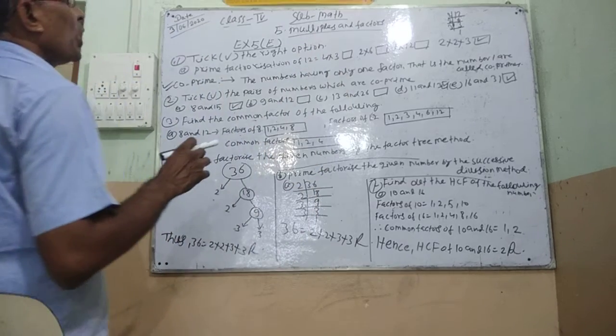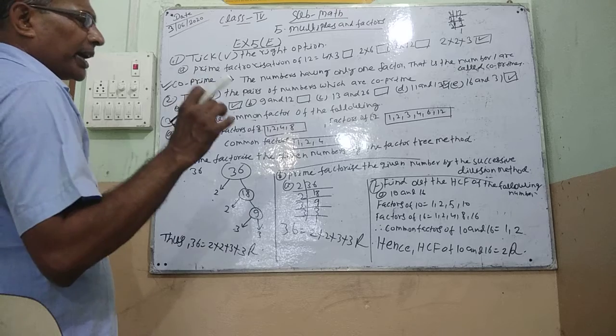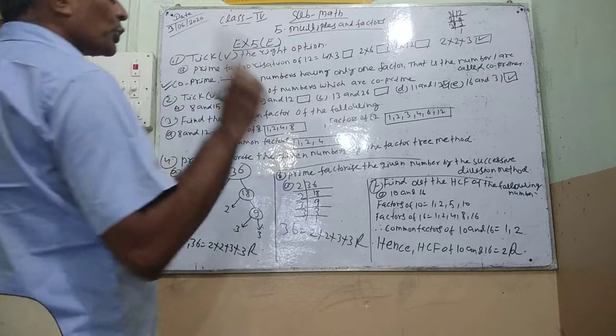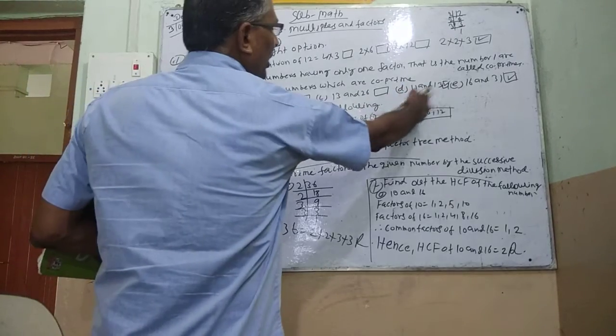Now, the pairs of co-primes. Co-primes have only factor 1 common. A, D and E.